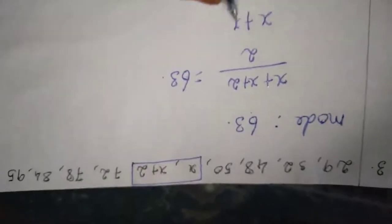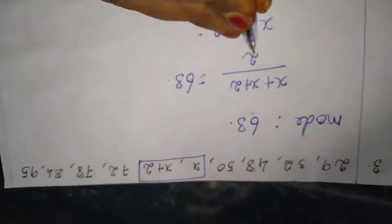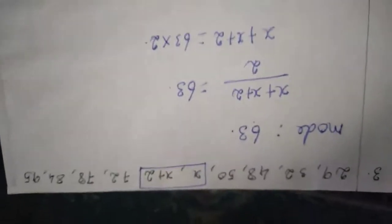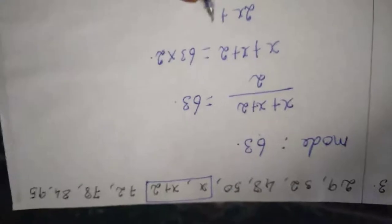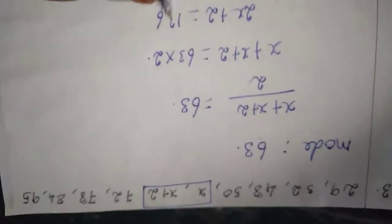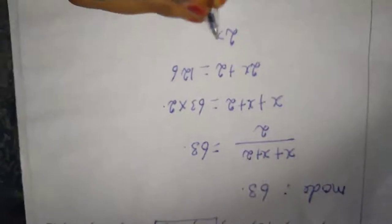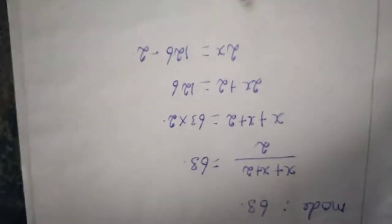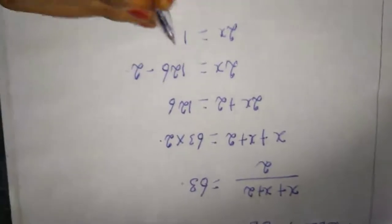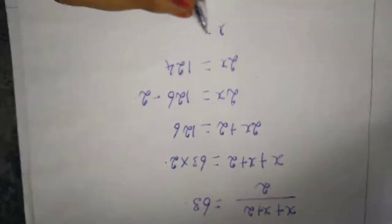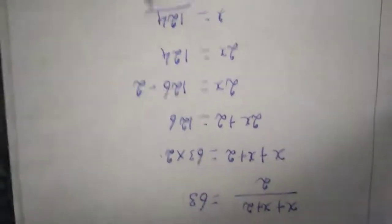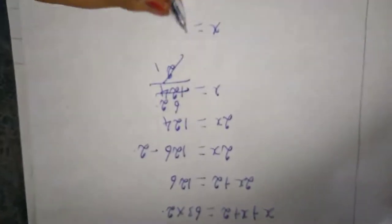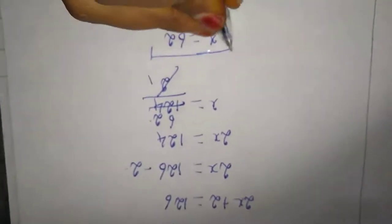So x plus x plus 2 equals 63 times 2. That gives 2x plus 2 equals 126. Then 2x equals 126 minus 2, which is 124. So x equals 124 divided by 2. 12 divided by 2 is 6, so x equals 62. This is the answer.